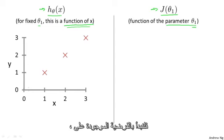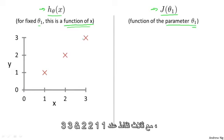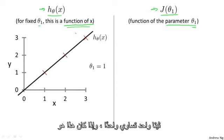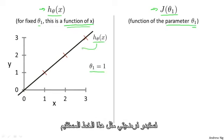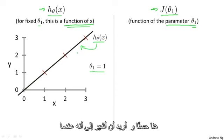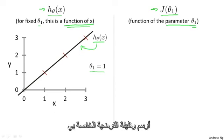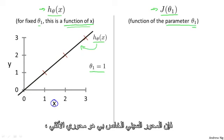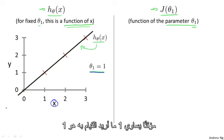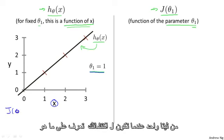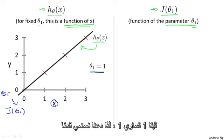Let's start with the hypothesis. On the left, let's say here's my training set with three points at (1,1), (2,2), and (3,3). Let's pick a value of theta one — I'm going to set theta one equals one. If that's my choice for theta one, then my hypothesis is going to look like this straight line. When I'm plotting my hypothesis function, my x-axis, my horizontal axis, is labeled x — size of the house. Now I've temporarily set theta one equals one. What I want to do is figure out what is J of theta one when theta one equals one.